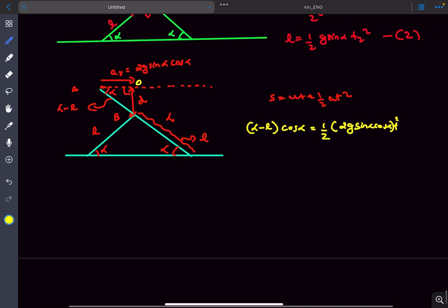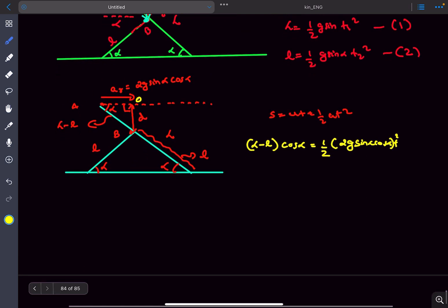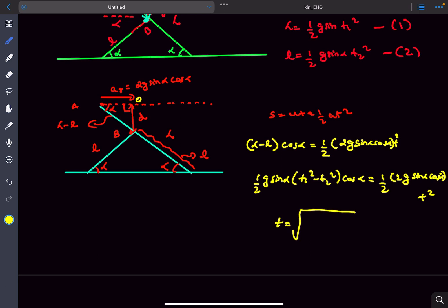Capital L and small l we can eliminate from equations 1 and 2. The difference of those will become half g sin alpha times t1 squared minus t2 squared. Solving further, we get the value of t to be square root of t1 squared minus t2 squared upon 2. That was the solution.